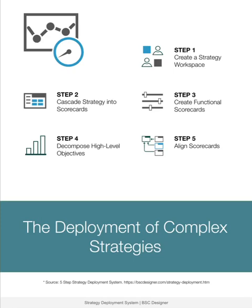For simple strategies, drafting ideas in tools like Excel or PowerPoint is enough. But if your strategy is complex, it requires a holistic deployment. How do you implement a strategy in this case? A quick answer is by cascading high-level objectives into various scorecards and, within each scorecard, decomposing those objectives into goals, KPIs, initiatives, and risks.